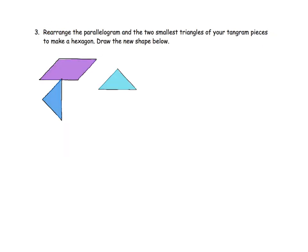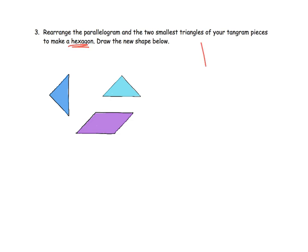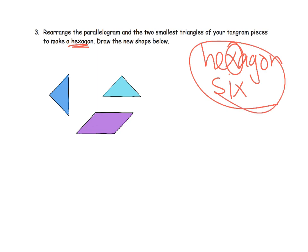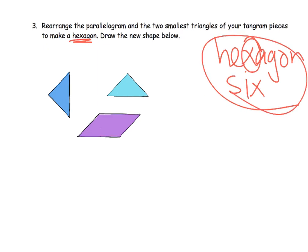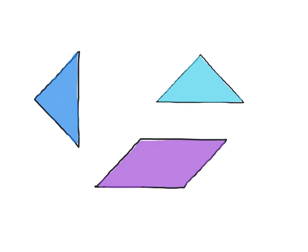So here we are being asked to rearrange the parallelogram and the two smallest triangles to make a hexagon. So the idea is we have to remember, well, what is a hexagon? Hexagon has that X, so it has six sides. So we know that we're going to try and use these pieces to create a six-sided figure. Oh my goodness, a six-sided figure. I don't know how to, let's see.